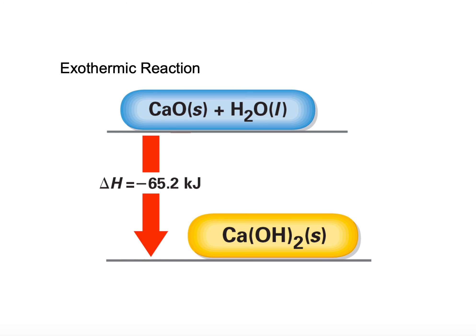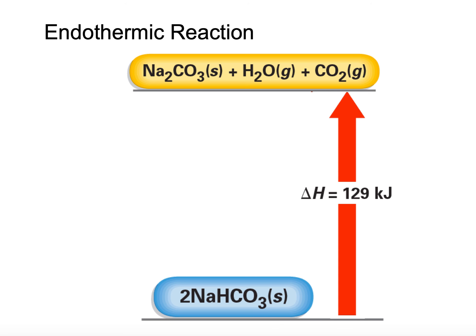We see here this exothermic reaction of calcium oxide and water. We know it's exothermic because we have a negative delta H, and this delta H value can be considered a product. In this decomposition of sodium bicarbonate or baking soda, the carbon dioxide released in the reaction causes a cake to rise while baking. Since it's a positive delta H, we're going to have an endothermic process.